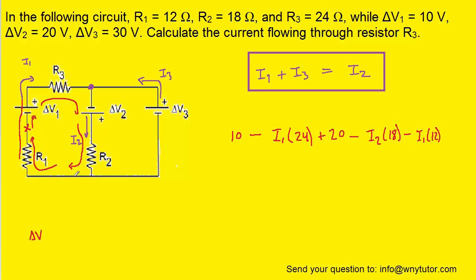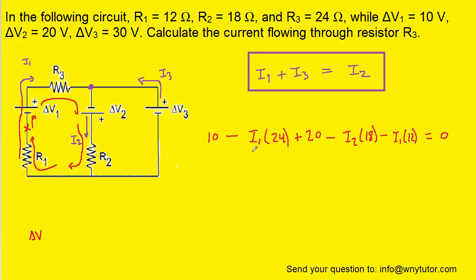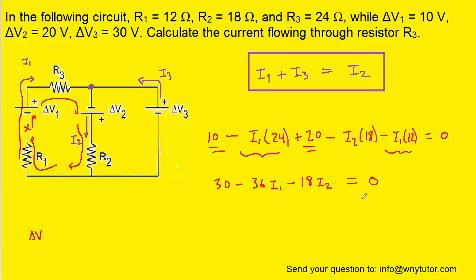We return to the start and set the sum of potential changes equal to zero. Combining like terms: 10 plus 20 gives 30, and the negative 24I1 and negative 12I1 combine to give negative 36I1. So our equation becomes: 30 minus 36I1 minus 18I2 equals zero. We'll hold on to this equation.